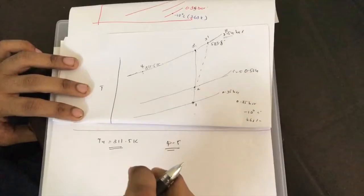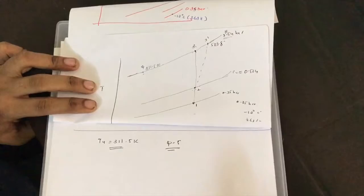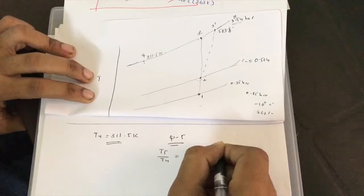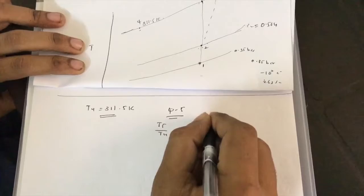The expansion process 4 to 5 is adiabatic for the ideal case. For ideal expansion, we use the formula T5/T4 = (P5/P4)^((γ-1)/γ).